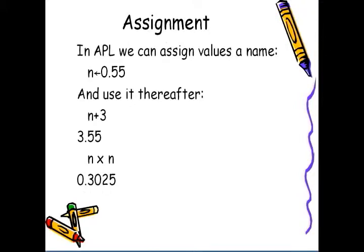For example, here we give the number 0.55 the name n, and the way we do it is with the little left arrow right there. Thereafter, we can use it in calculations. For example, here we see n plus 3 and n times n.